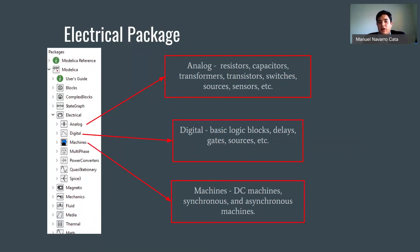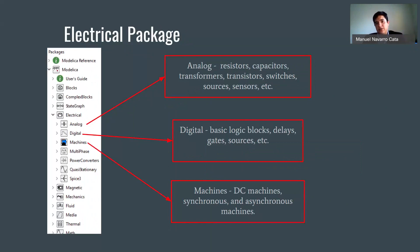The electrical package has analog devices such as resistors, capacitors, transformers, transistors, switches, sources, and sensors. The digital part has basic logic blocks like AND, OR, etc., delays, gates, and even sources. It also has machines such as DC machines and synchronous and asynchronous machines, which is important because in the case of power system research, we can start modeling through here.